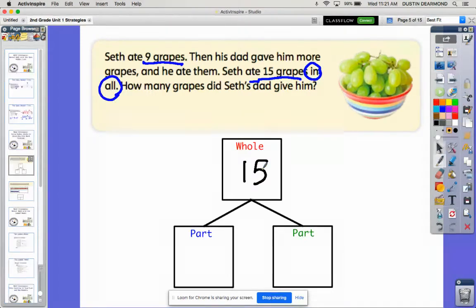What do we know from the problem? I know his dad gave him some grapes, but I also know he started out with grapes. He started out with nine grapes, and his dad gave him some more. So over here is where his dad gave him some, here's what he started with, and here's what his dad gave him.